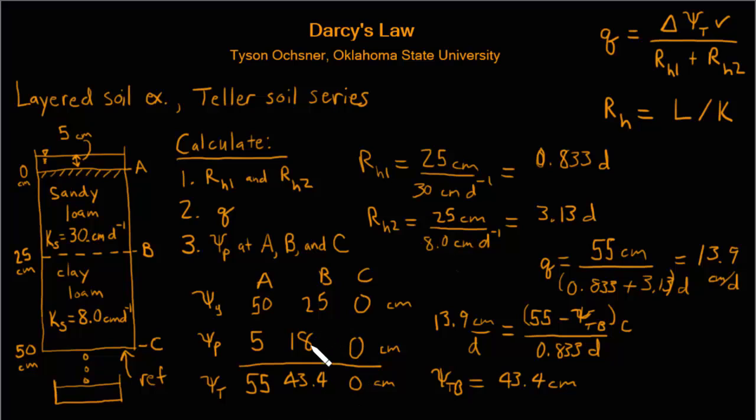So it's interesting to note that there's not much drop in the water potential as this water flows through layer A. It only goes from 55 to 43 centimeters. Most of the drop in the total potential occurs across the second layer where the pressure drops from 43.4 to 0 centimeters. That's simply because of the much lower hydraulic conductivity of the second layer. It takes more drop in water potential to move the water through that second layer.